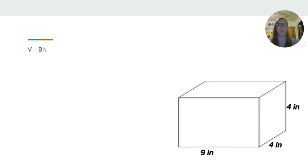So, here we have the same figure. Our area of our base is going to be 9 times 4, 36, then times 4 again is 144 inches cubed. Volume is always cubed, area always squared.